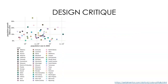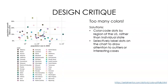And our last example: there are just too many different colors. It's almost impossible to go back and forth between the key and the chart to figure out which state is which. We could instead stick with about six colors to color-code the dots by region of the U.S. rather than by individual state, then label a few specifically selected dots on the map with their state name to draw attention to outliers or interesting cases.